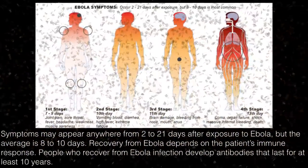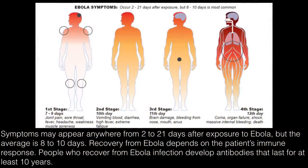What are the symptoms of Ebola? These occur 2 to 21 days after exposure, but 8 to 10 days is more common. In the first stage, days 7 to 9, you get joint pain, sore throat, fever, headache, weakness, and muscle soreness — what we call myalgias. In the second stage, around day 10, you get vomiting blood, diarrhea, high fevers, and extreme fatigue.